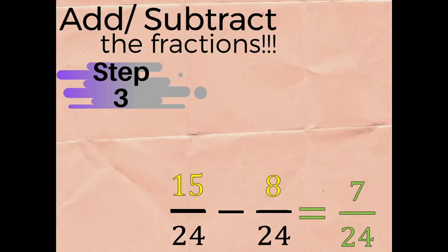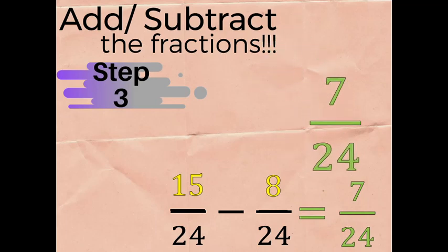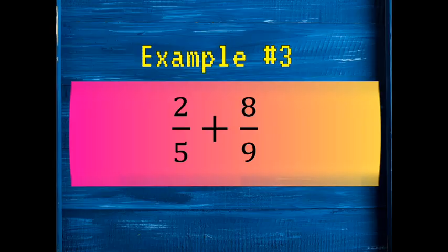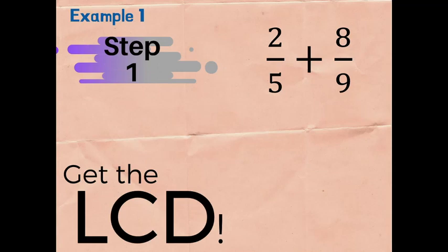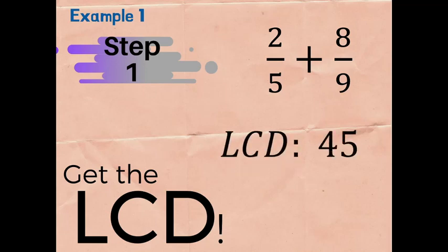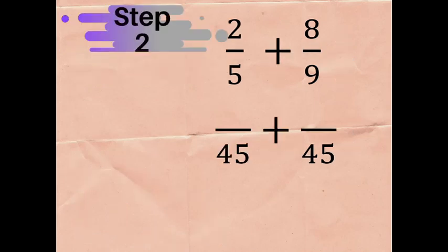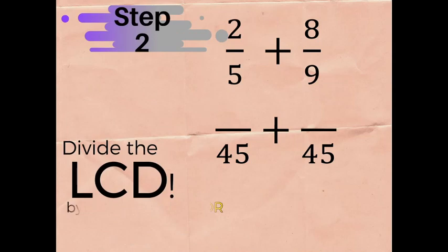Since we cannot simplify any further, 7 over 24 is our final answer. Now let's move to our last example. In example number three, we're going to add 2/5 and 8/9. Step one: get the LCD of 5 and 9, which is equivalent to 45.